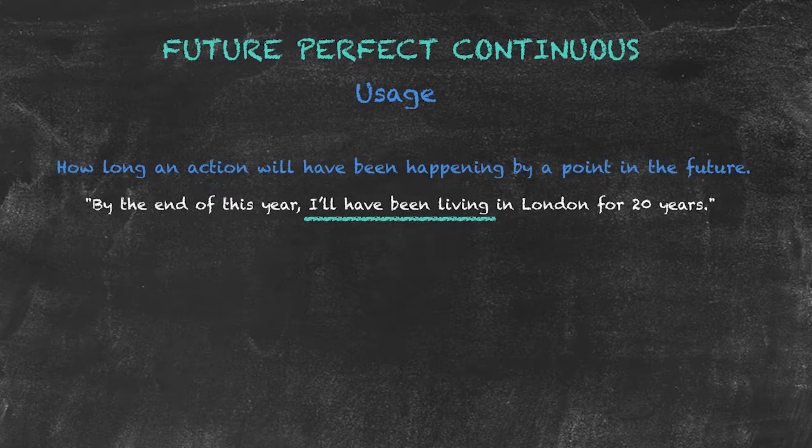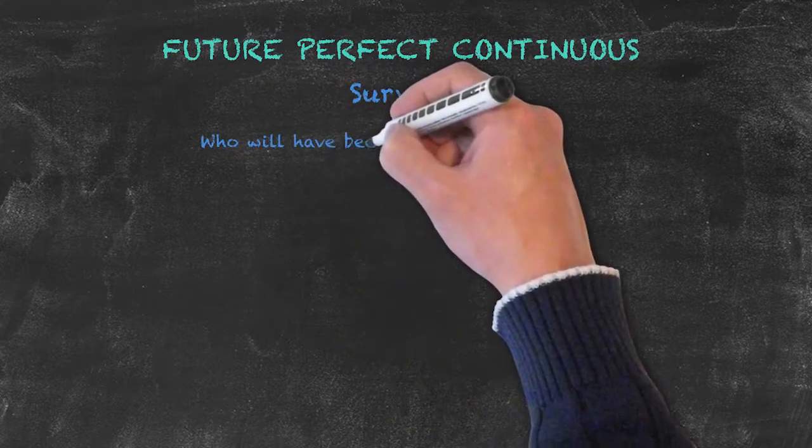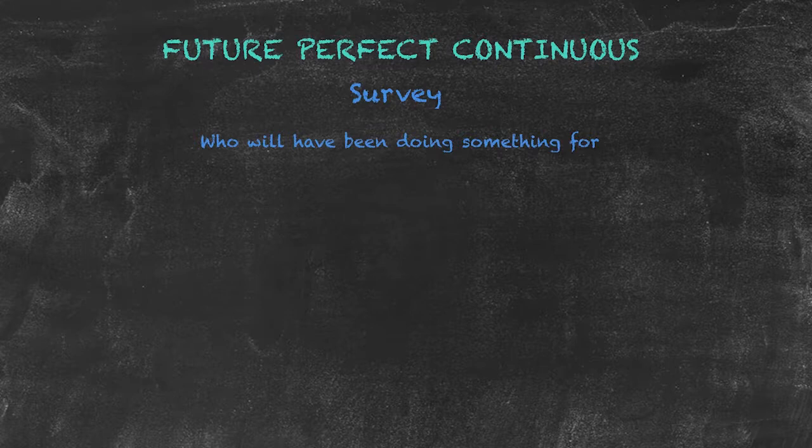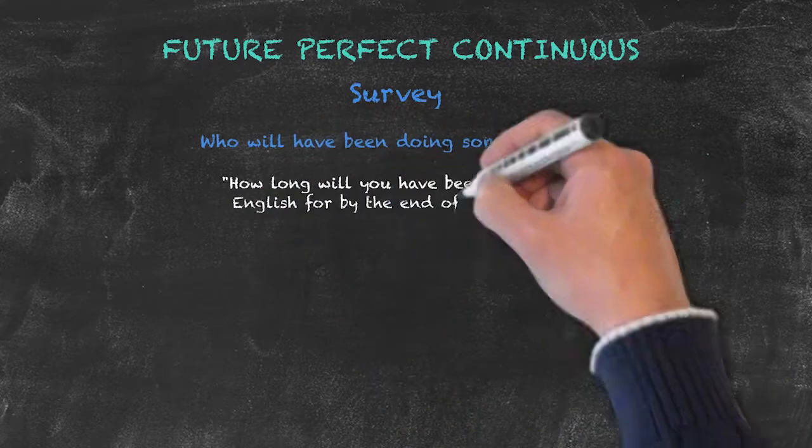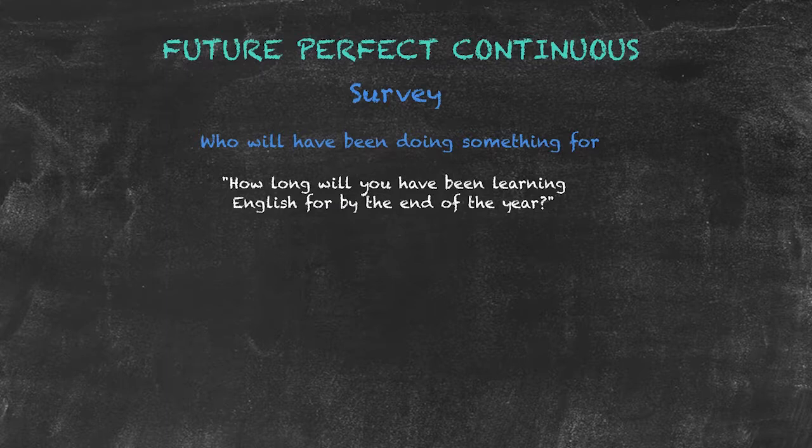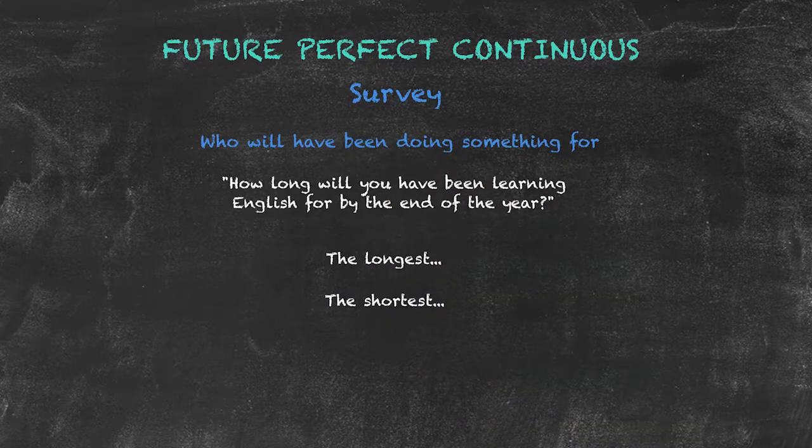A teaching idea for the future perfect continuous tense includes a survey. Here we want to be able to find out the duration of an activity at a certain point in time in the future. A sample question might be: 'How long will you have been learning English for by the end of the year?' At the end of the activity, we should be able to identify who will have been learning English for the longest and who for the shortest amount of time.